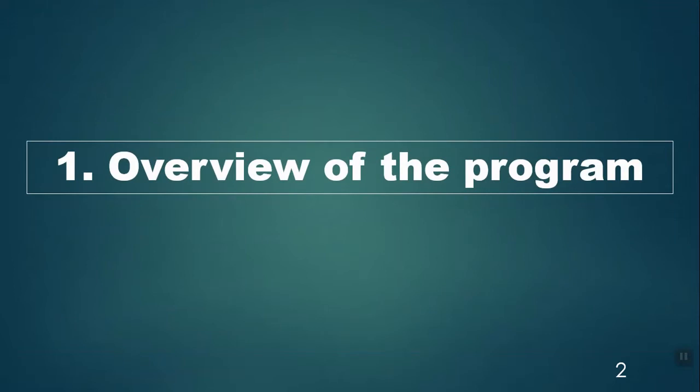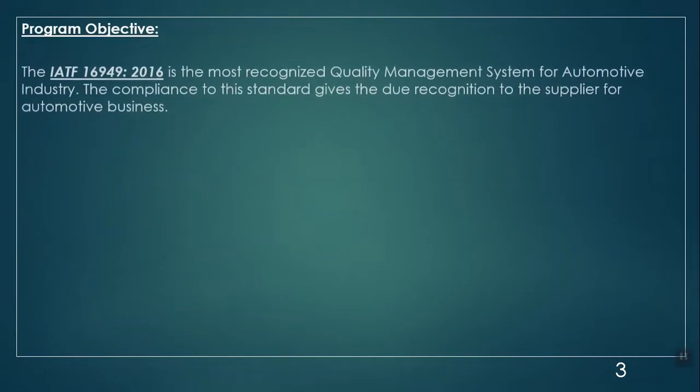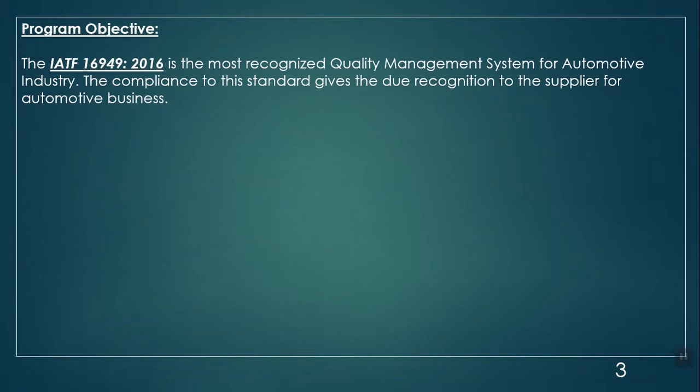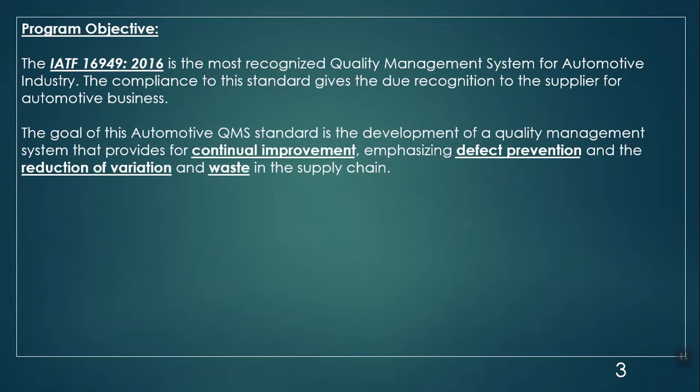In this section we will give an overview of the program, starting with the program objective. The IATF 16949:2016 is the most recognized quality management system for the automotive industry. Compliance to this standard gives due recognition to the supplier of automotive business. The goal of this automotive QMS standard is the development of a quality management system that provides for continual improvement, emphasizing defect prevention and the reduction of variation and waste in the supply chain.